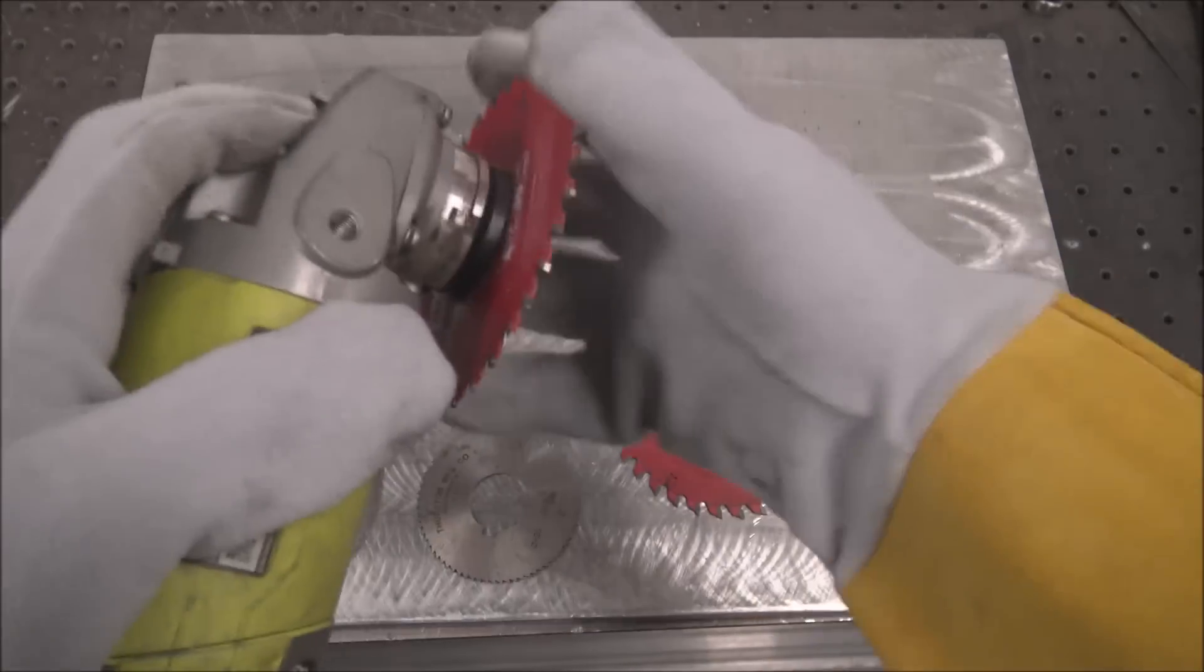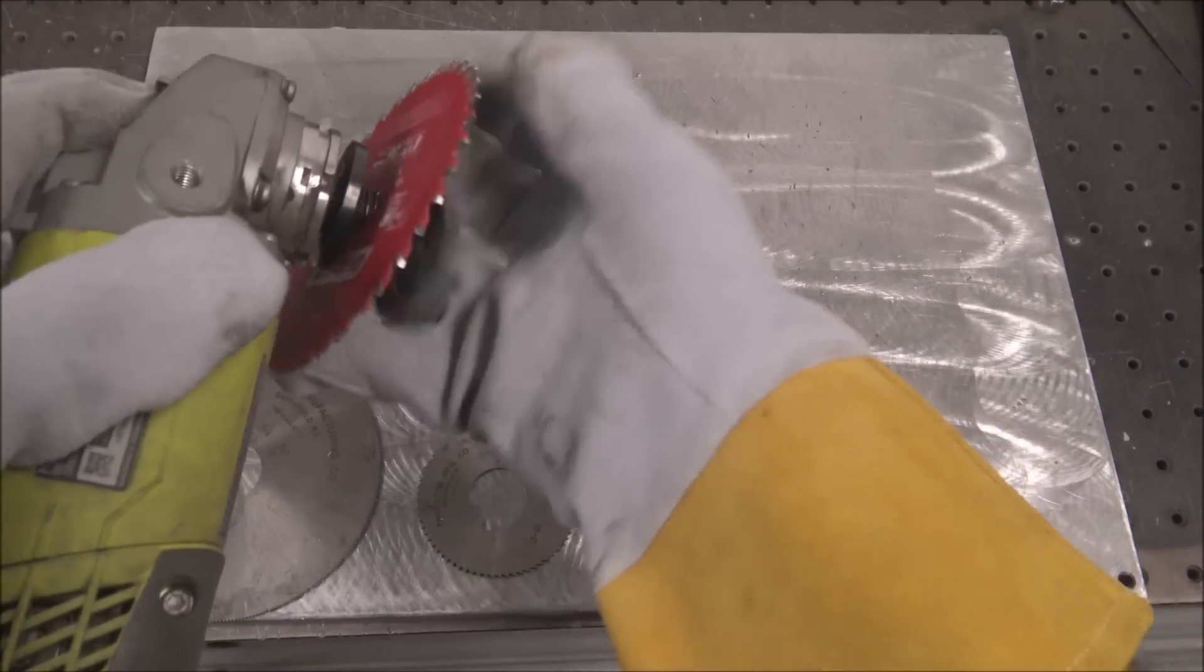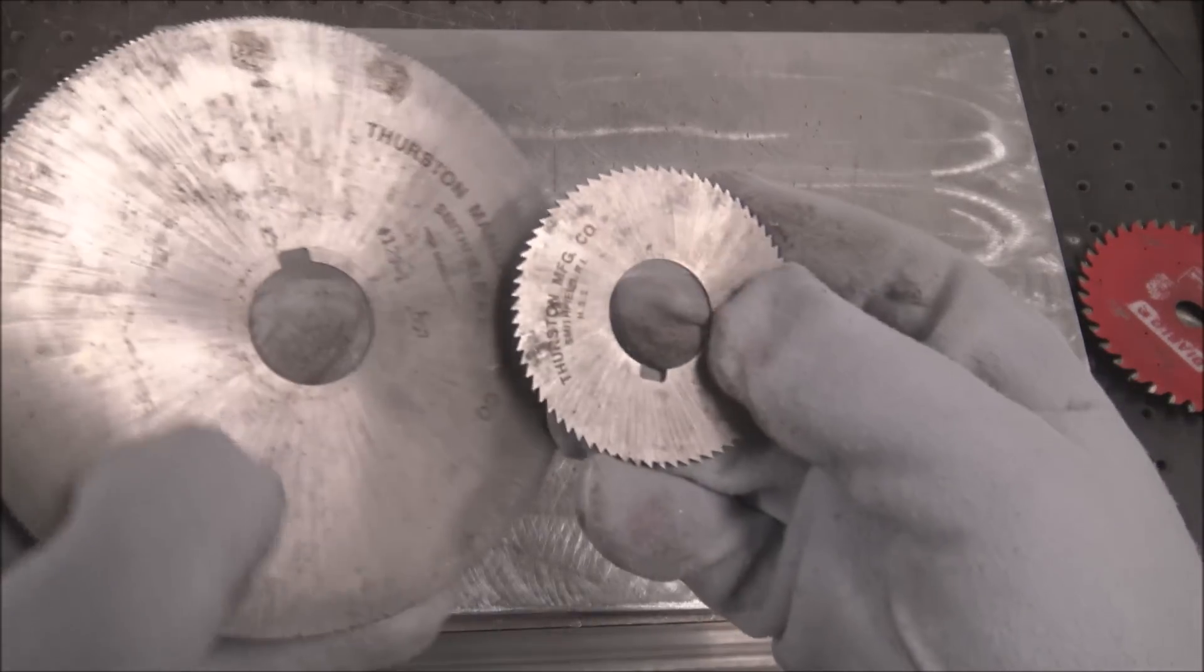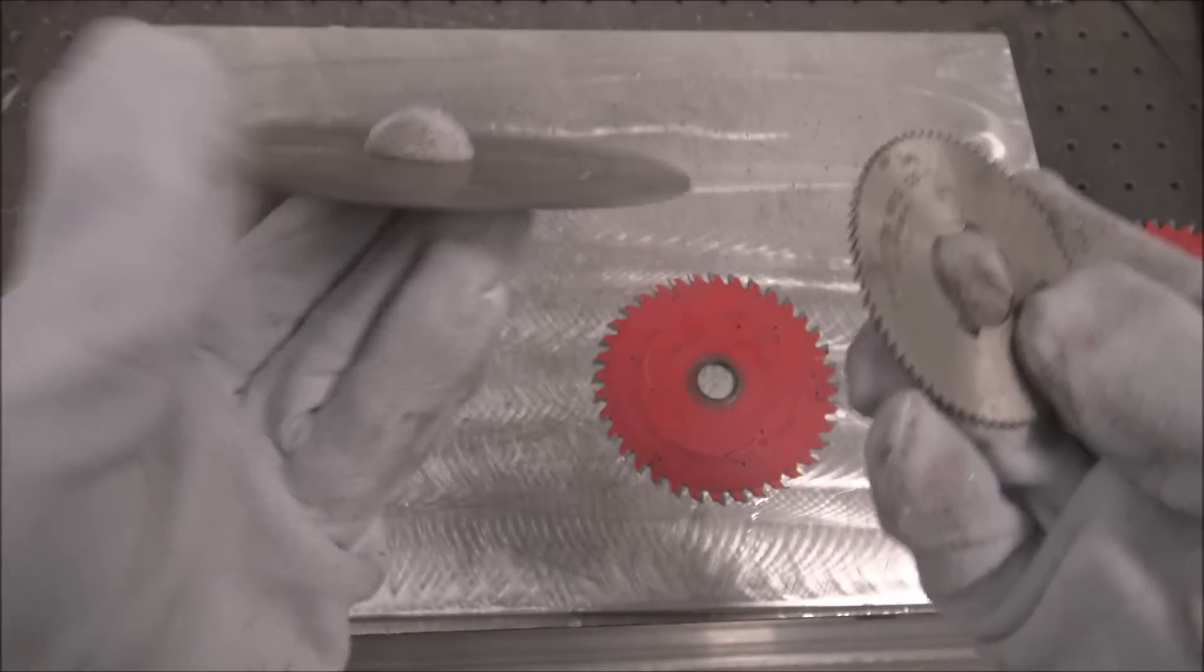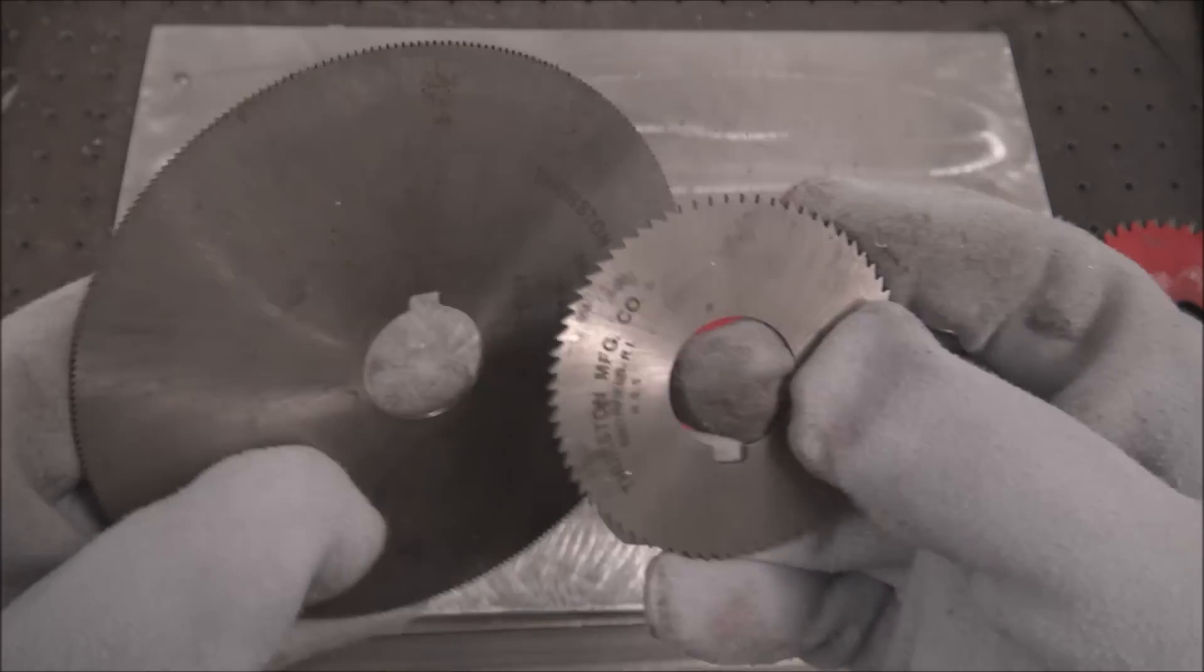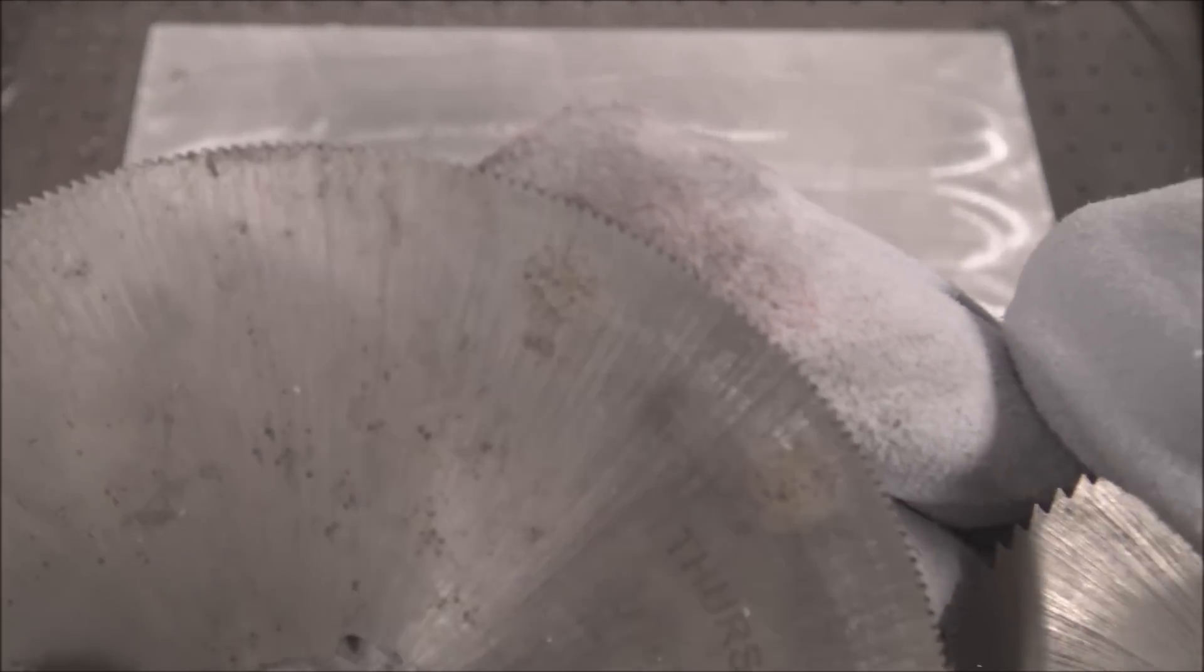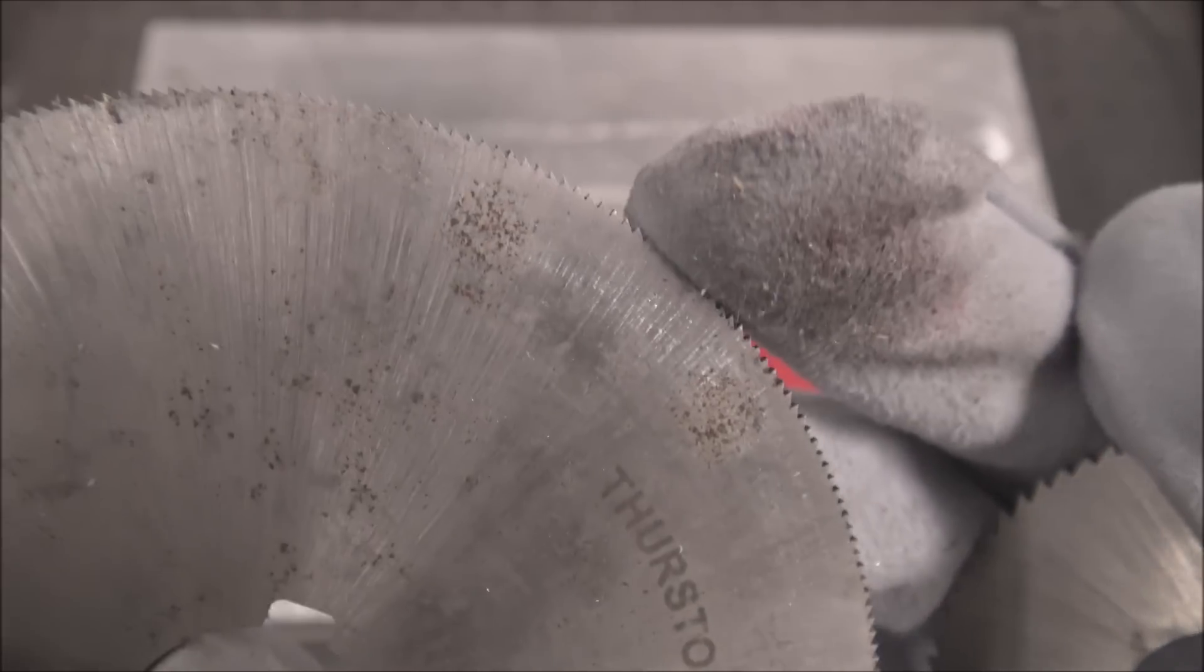These are slitting saws that you use in a mill to cut keyways and stuff. These are the only two that I have—I hardly ever use them. I know this one's not gonna work good on aluminum because there's way too small of teeth.